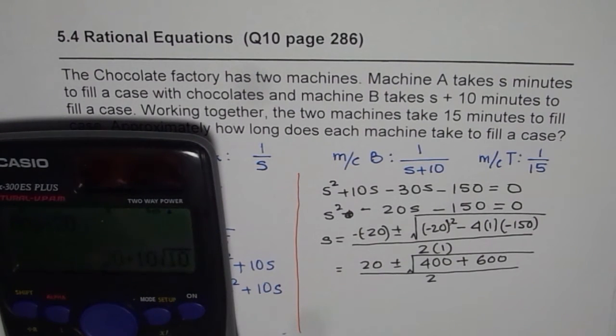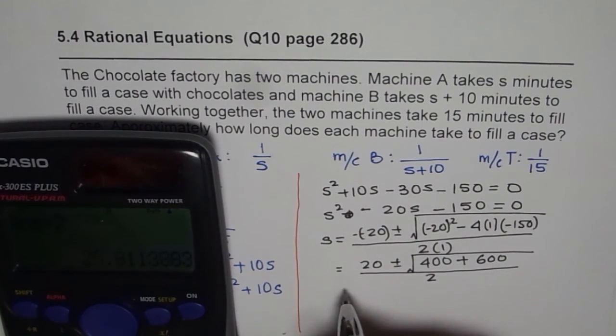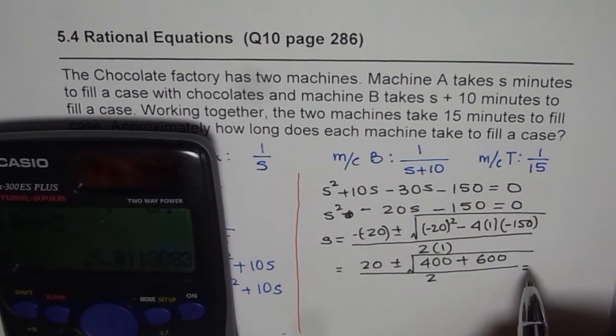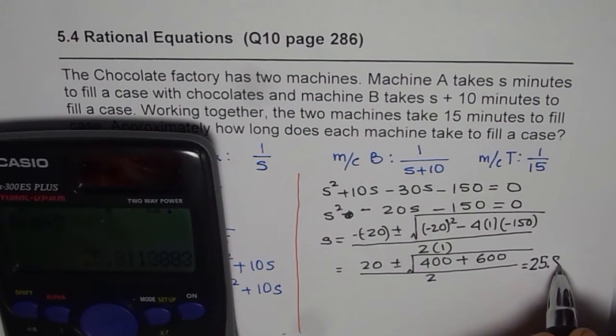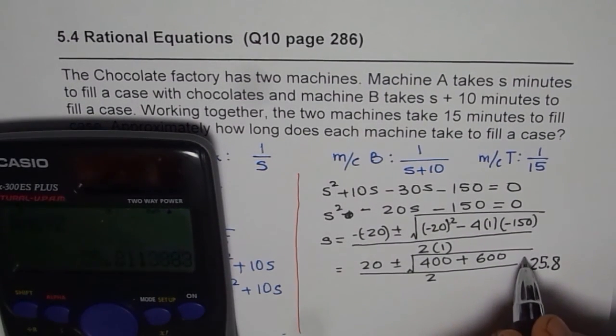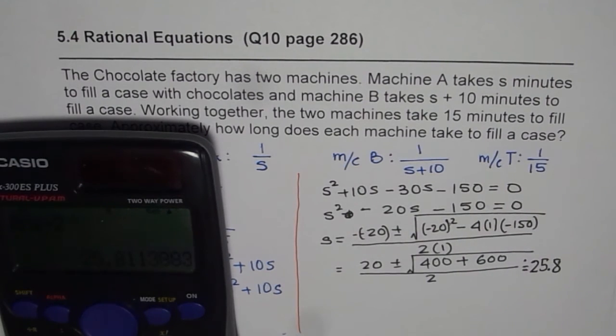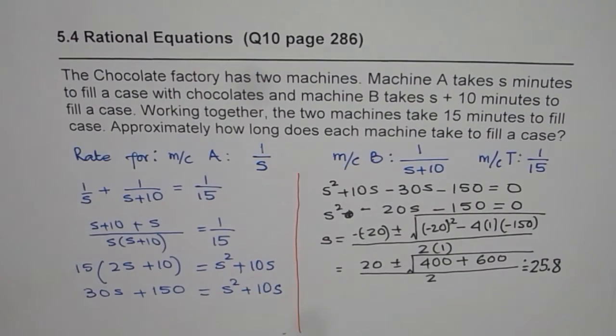And we get something which is in decimals 51.62 which we have to divide by 2, giving us 25.8. So rounded to approximately 25.8, so that is the value of s.